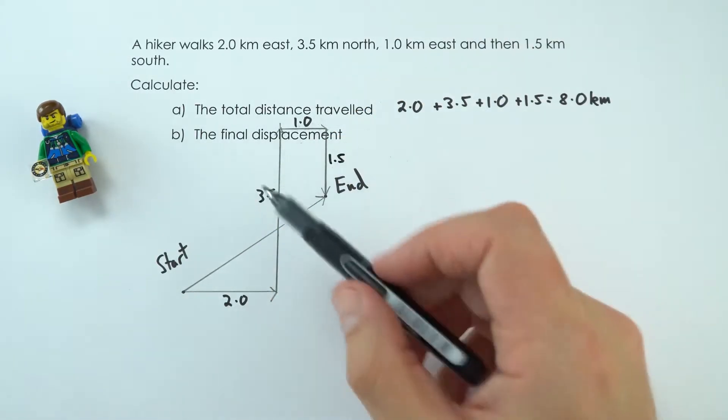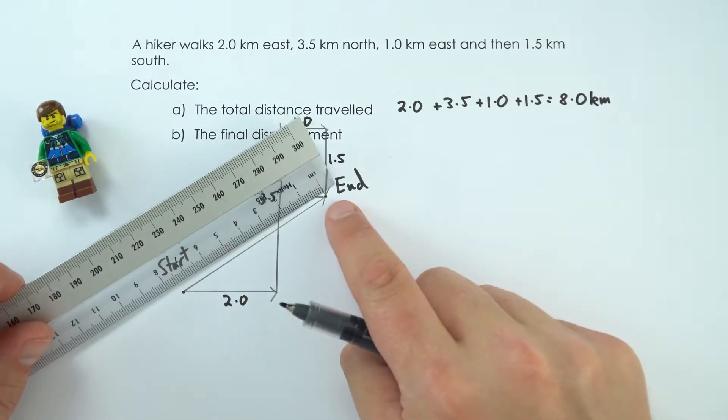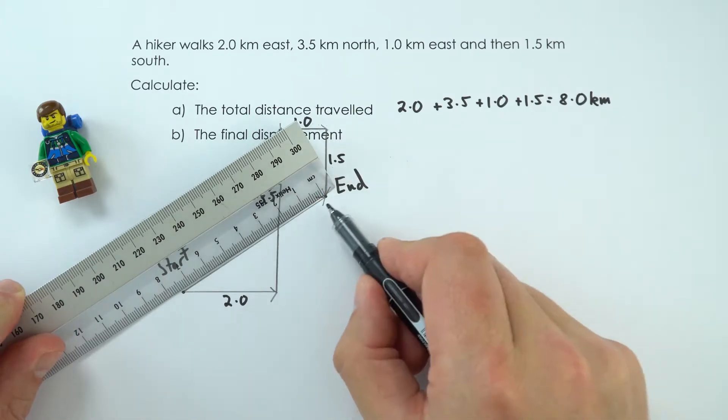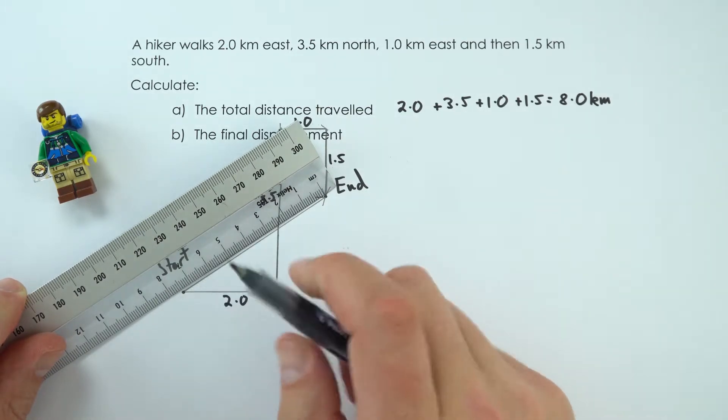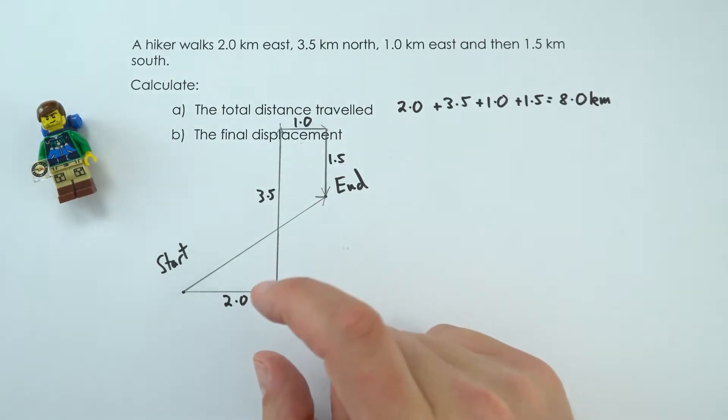Now, to work out this distance I could do it by measuring the line. Even though this is just a rough diagram, it's just over seven, so that's going to be about just over three and a half kilometers. So that's the rough value that I'm trying to get to. I'm going to use mathematics, trigonometry and Pythagoras to work it out.